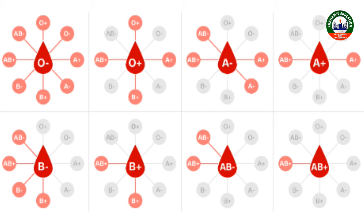For AB Rh-positive: antigens on RBCs are A, B, and D, and there is no antibody in the plasma. For AB Rh-negative: antigens on RBCs are A and B, and the antibody is anti-D. For O Rh-positive: the antigen on RBCs is D, and the antibodies in plasma are anti-A and anti-B. O negative contains no antigen at all, which is why O negative is known as the universal donor.